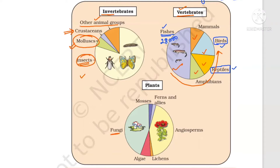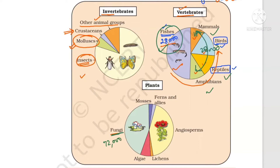Fungal species are more than the combined total of fishes, amphibians, reptiles and mammals. Since fishes are 28,000, the combined total of fishes, amphibians, reptiles, and mammals is also about 28,000, meaning fungi should be more than 56,000. Fungal species are actually nearly 72,000. However, angiosperms are still the highest among all plants.